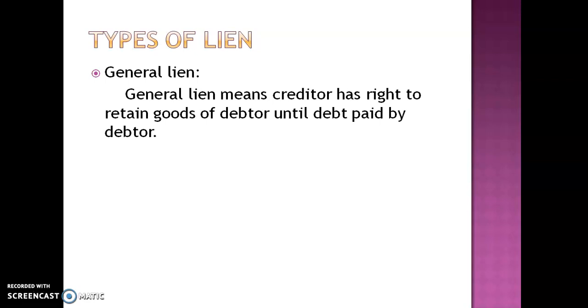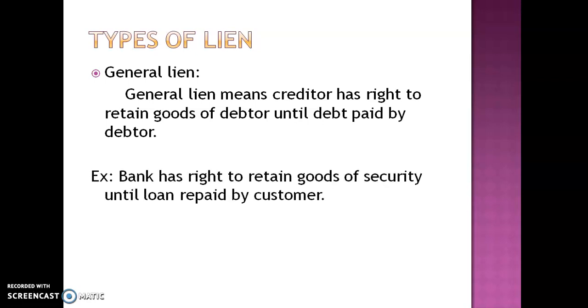There are three types of lien. The first is general lien, also known as banker's lien. General lien means the creditor has the right to retain the goods of the debtor until the debt is paid by the debtor. For example, the banker or bank has the right to retain the security goods until the loan is paid by the customer. After repayment is received by the bank, the bank will re-transfer that car to the customer.